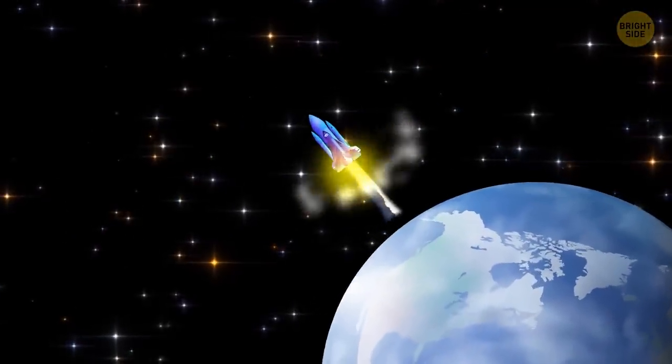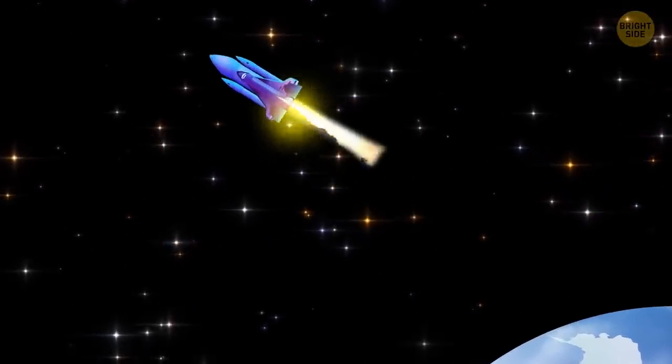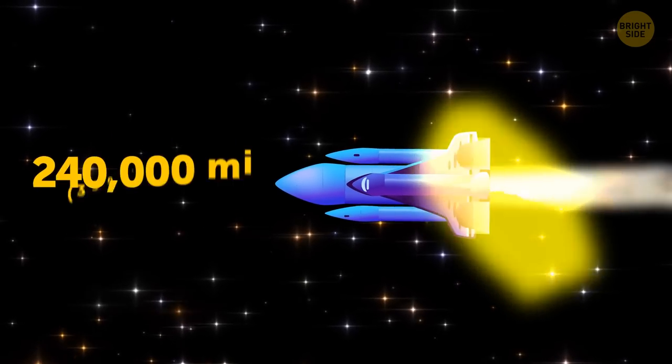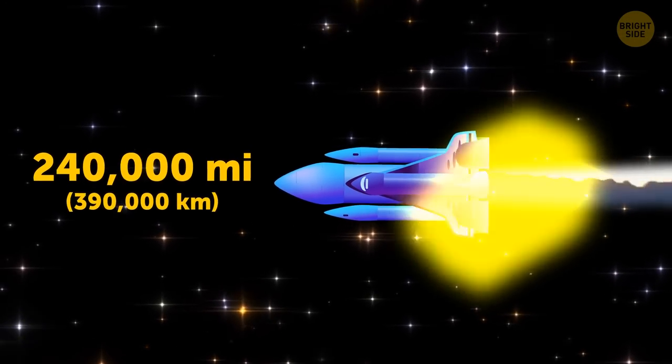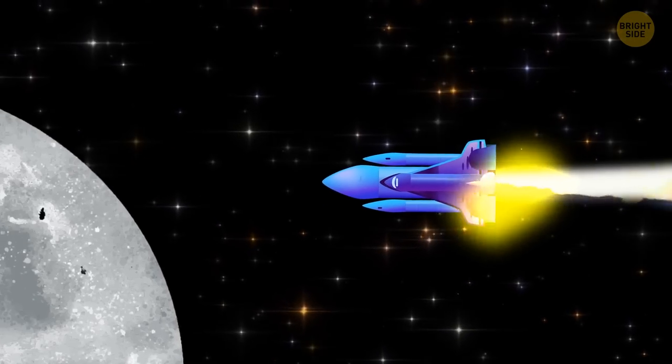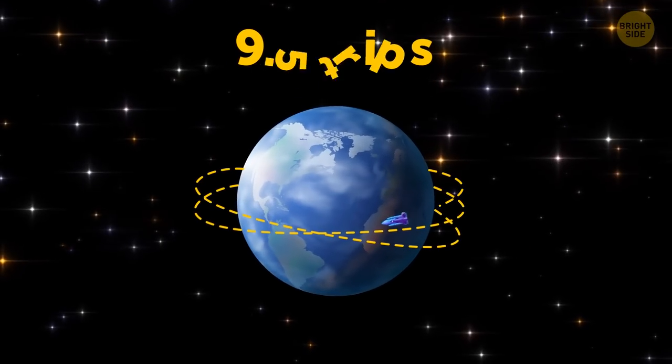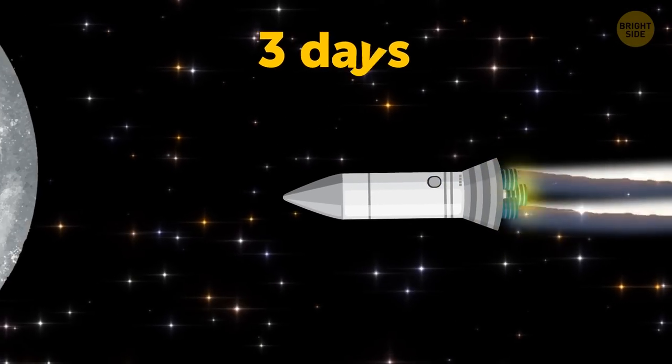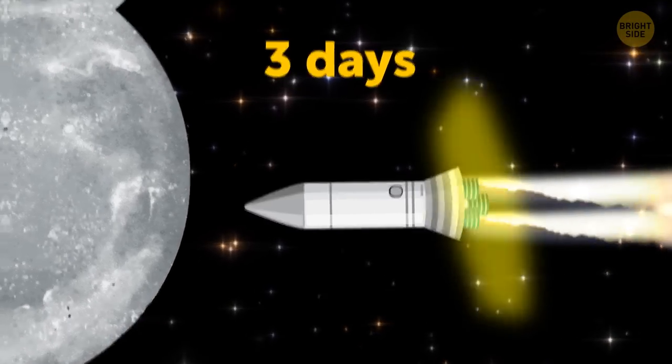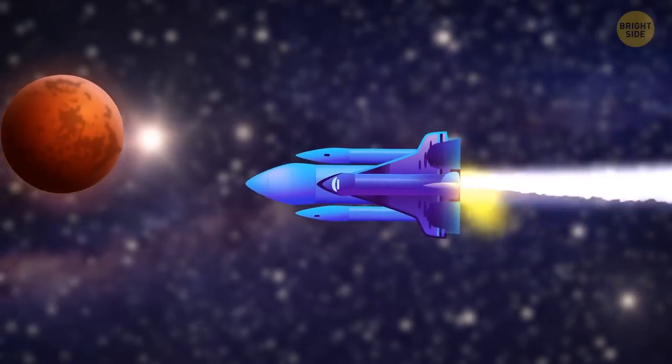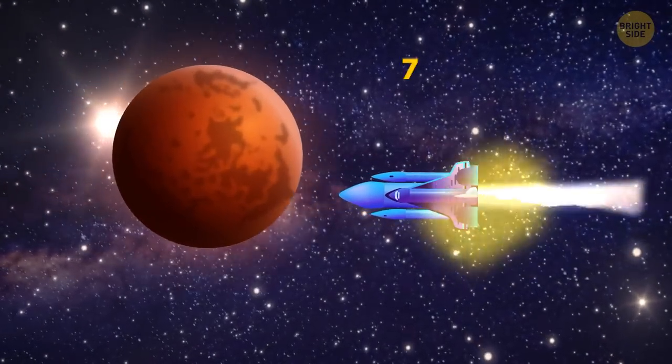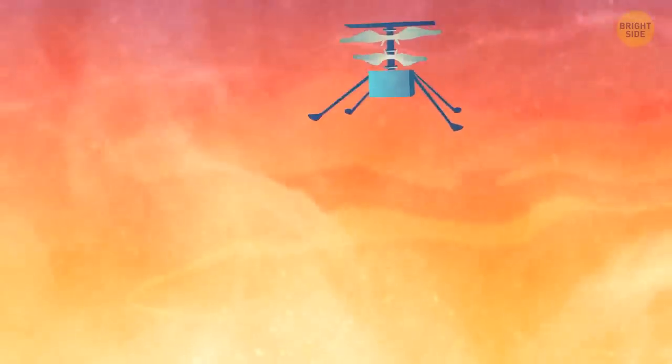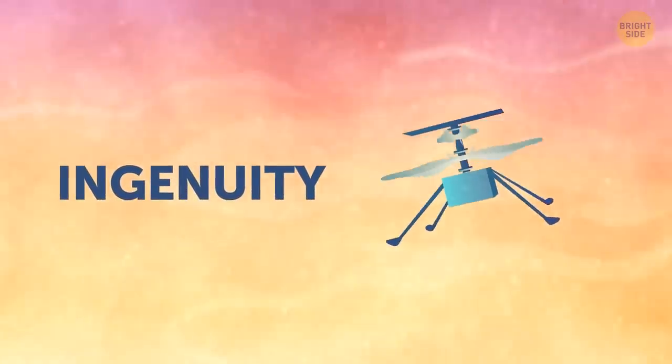We launch our faster-than-light spaceship and set off on our journey to Betelgeuse. A few seconds, and we've already traveled 240,000 miles and now are close to the moon. That's nine and a half trips around the Earth. A traditional rocket-powered spacecraft would take three days to get here. We're near Mars now. The flight to the Red Planet usually takes about seven months. Several rovers are now at work here, as well as the first-ever flying drone, Ingenuity.